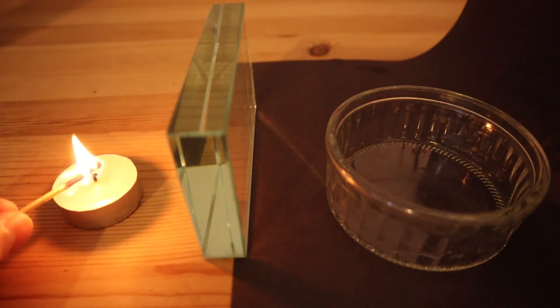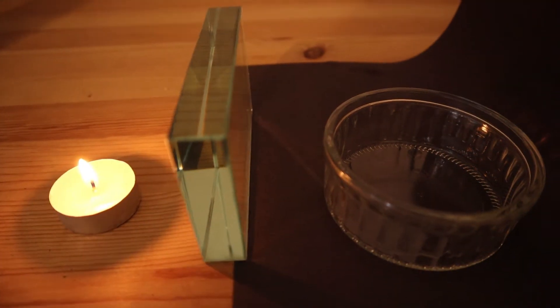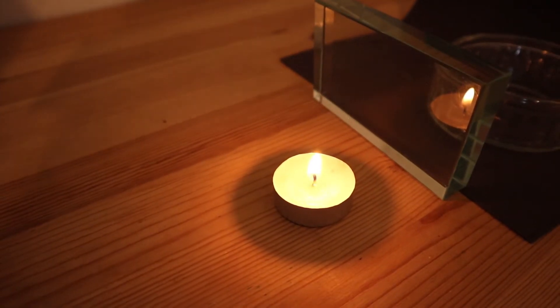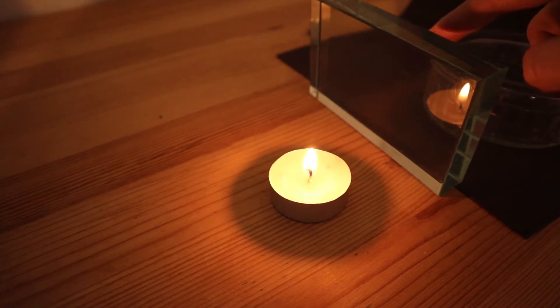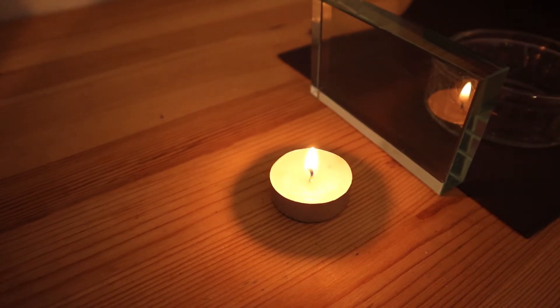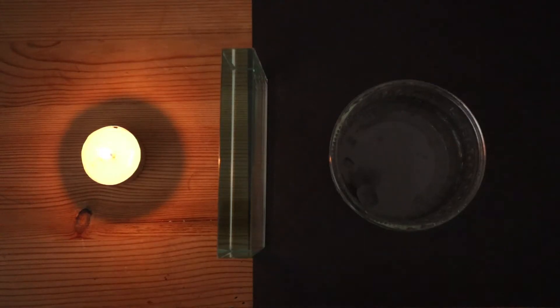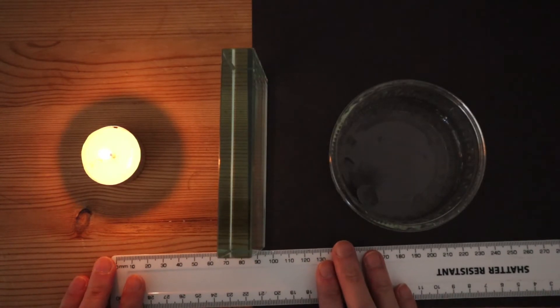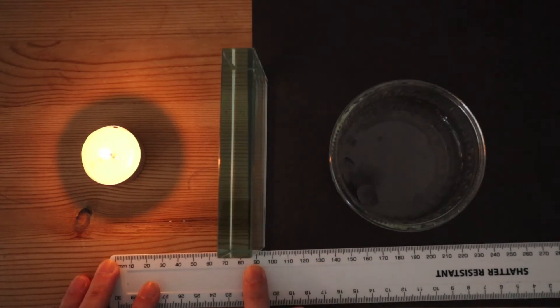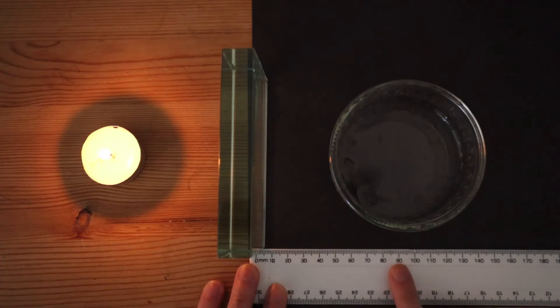When I light this candle, you will see that the candle's reflection produces a virtual image if you observe it from the right angle. That's because the glass acts as a partial mirror. And notice that the distance between the candle and the glass is the same as the distance between the image and the glass.